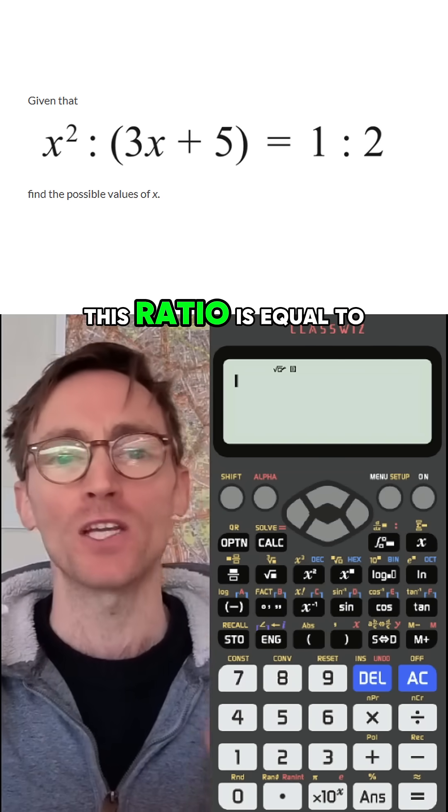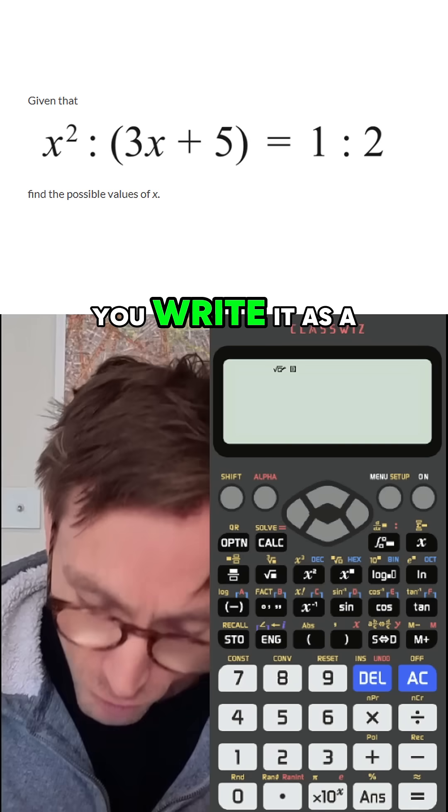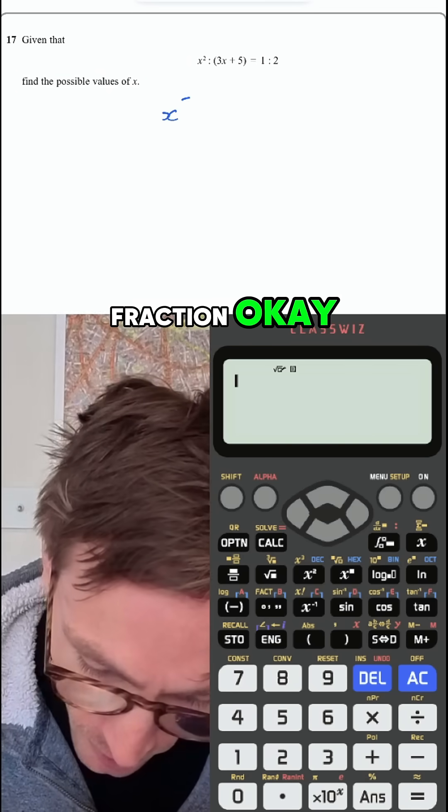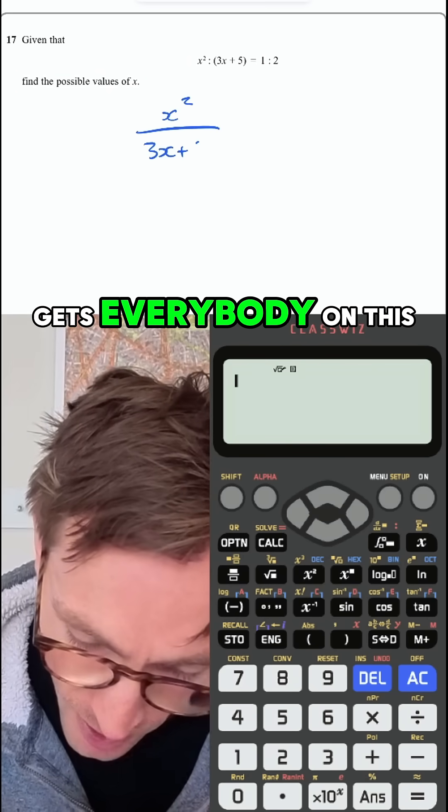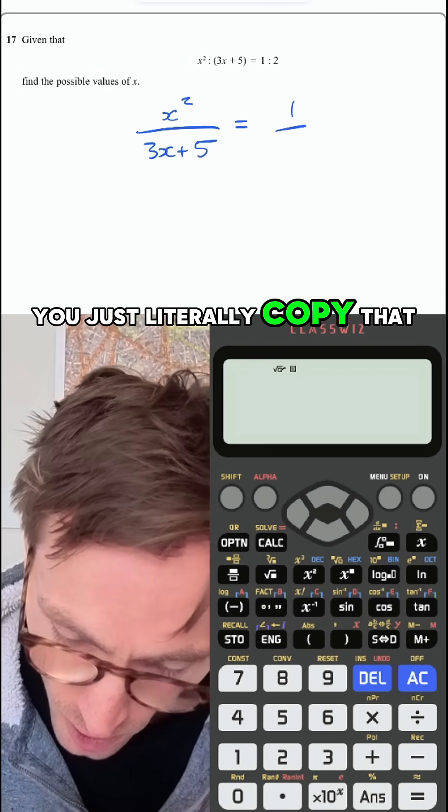Whenever they tell you that this ratio is equal to this ratio, you write it as a fraction. This is the thing that gets everybody on this question. You just literally copy that down.